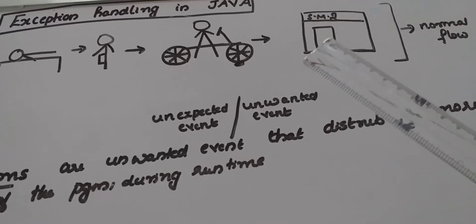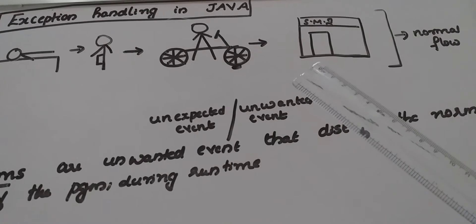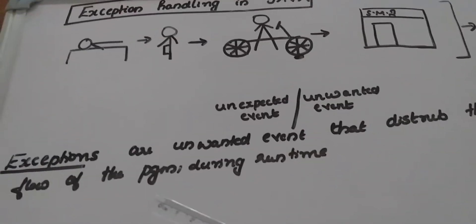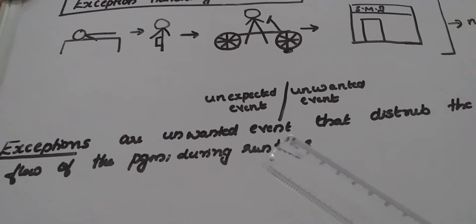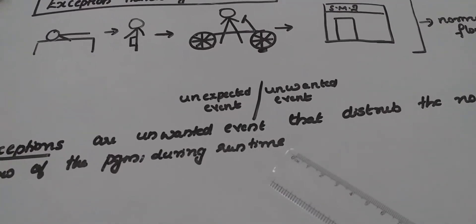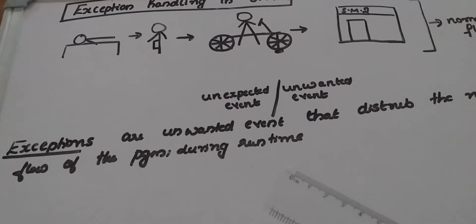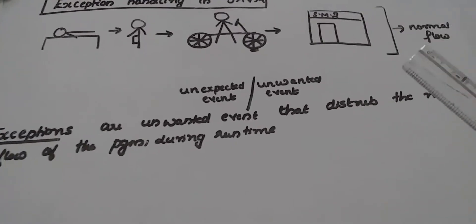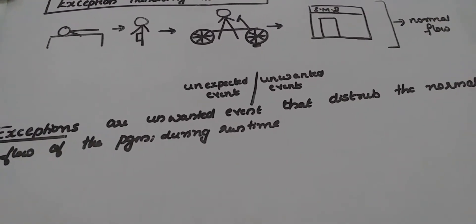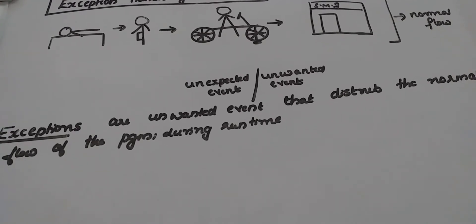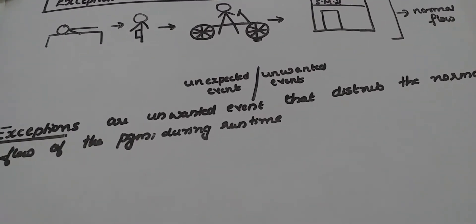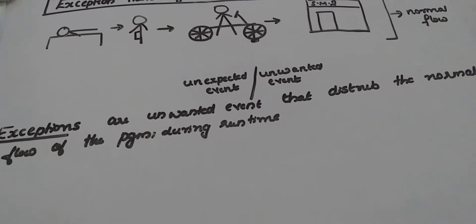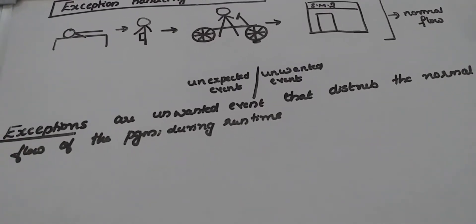An unwanted event occurs in the normal flow of life. Exception handling is similar to this. Exceptions are unwanted errors that occur during the normal execution of a program during runtime. They disturb the normal flow of the program during runtime.